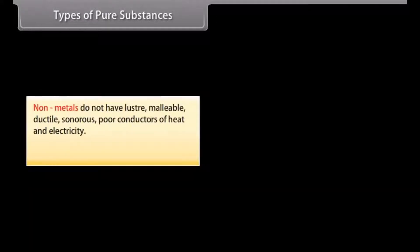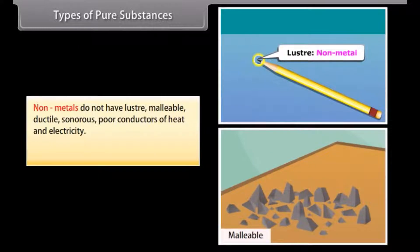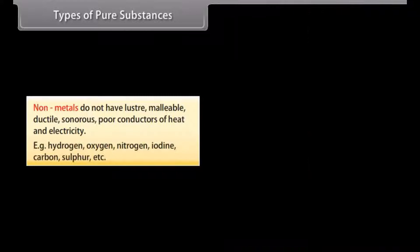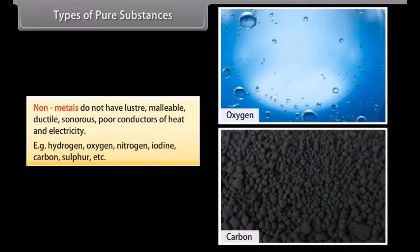Non-metals do not have lustre, malleability, ductility, or sonorous properties. They are poor conductors of heat and electricity. Examples include hydrogen, oxygen, nitrogen, iodine, carbon, sulfur, etc.